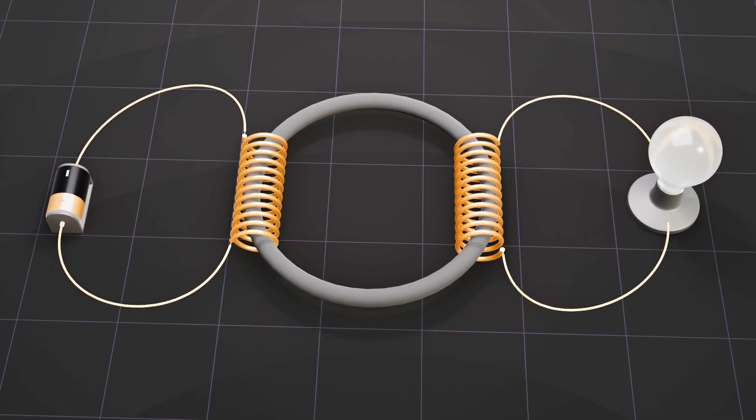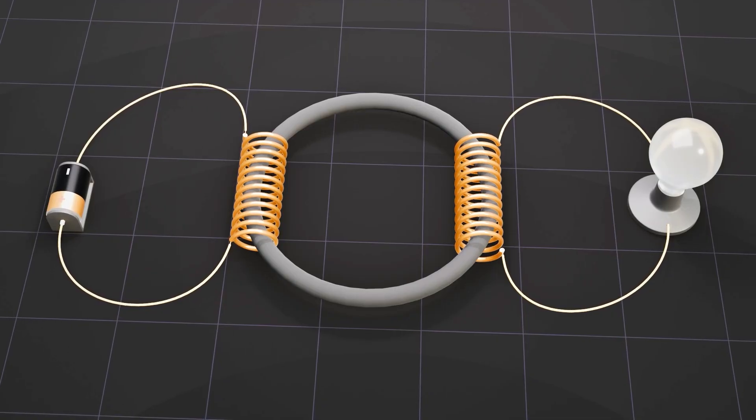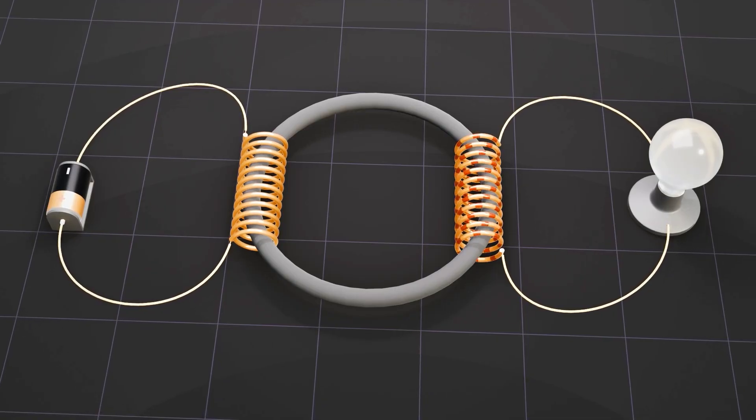When the current stops in the primary coil, it gets demagnetized, causing a sudden decrease in the magnetic field's strength, which induces another momentary current in the opposite direction in the secondary coil.